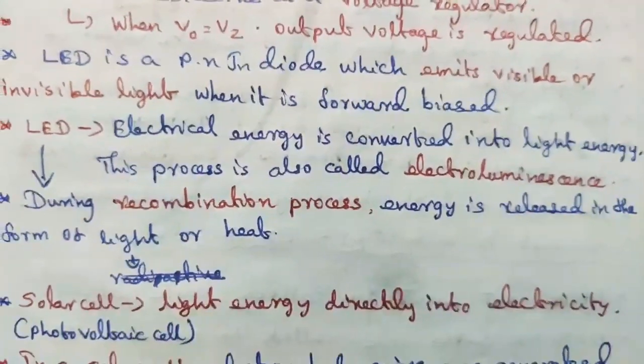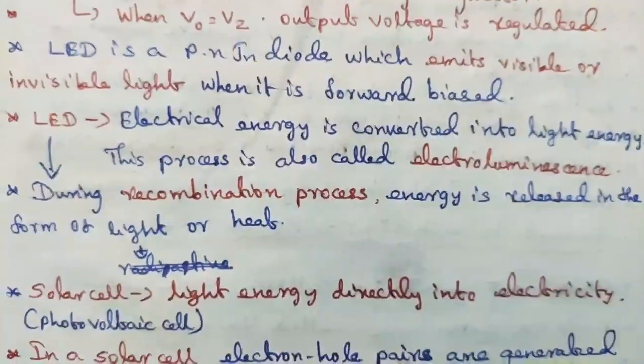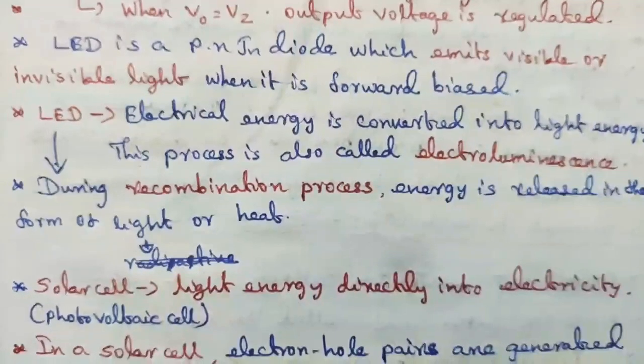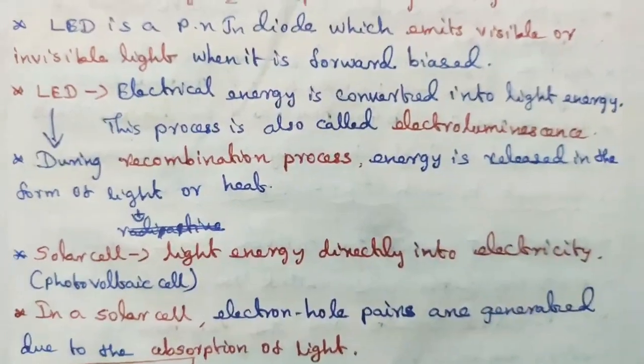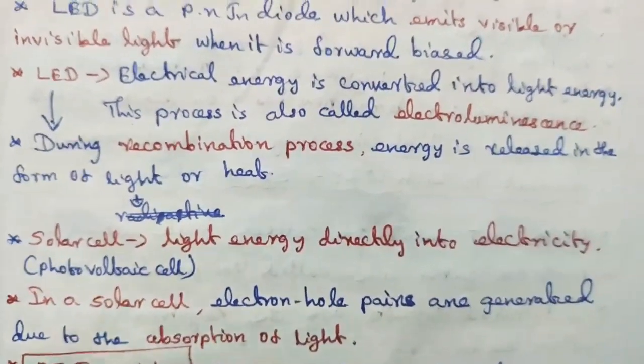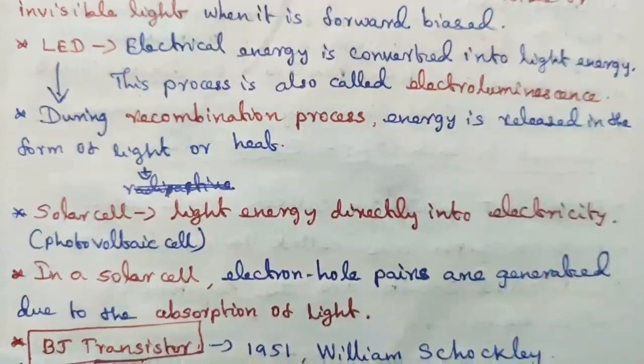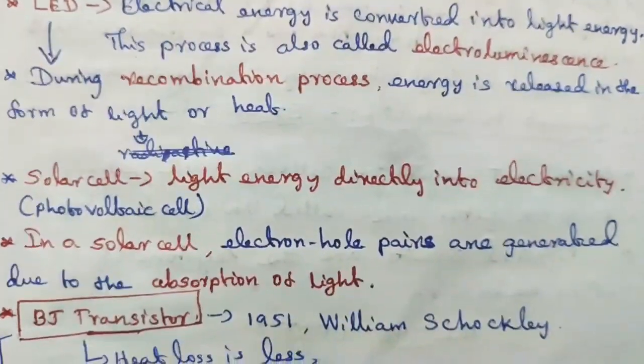In solar cell, light energy is directly converted into electricity. Solar cell is a photovoltaic cell. In a solar cell, electron-hole pairs are generated due to the absorption of light.